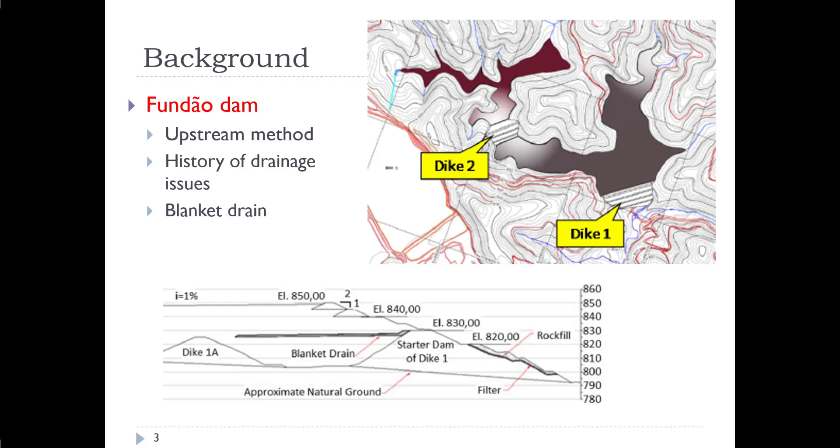A blanket drain was installed as part of the construction partway up through the material that can be seen in the cross-section figure here. So there's a starter dam, there's rock fill against the face, there's another dike installed upstream, dike 1A, and then we have tailings in the middle and blanket drains, and then upstream construction at the site.